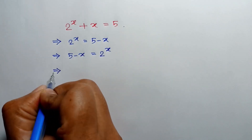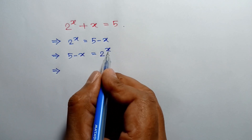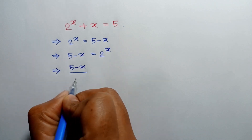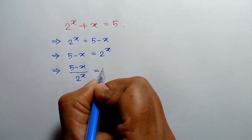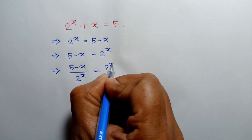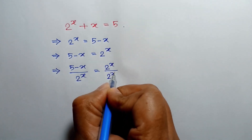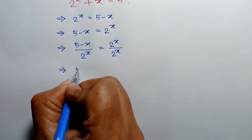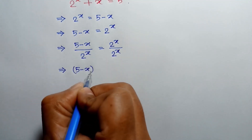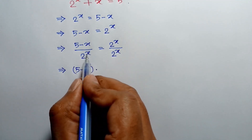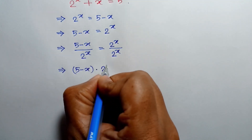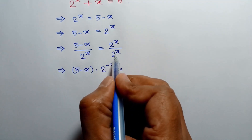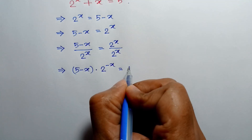Dividing both sides by 2 to the power x, we can write (5 minus x) over 2 to the power x is equal to 1. Here, 1 over 2 to the power x can be written as 2 to the power negative x, so we get (5 minus x) times 2 to the power negative x is equal to 1.